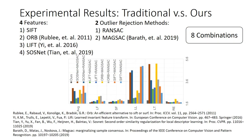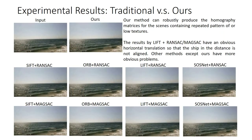We further compare our method with traditional methods. We select four features as descriptors, and choose RANSAC and MAGSAC as outlier rejection methods, giving eight combinations in total. The chart reveals that our method achieves the smallest error compared to all other methods. In one challenging example, the closest performance to ours is LIFT plus RANSAC or MAGSAC, but they still show an obvious horizontal translation error, while the other traditional methods obviously fail.